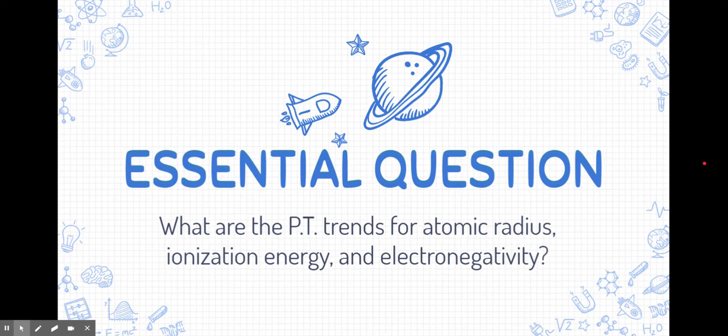What are the periodic table trends for atomic radius, ionization energy, and electronegativity? Remember, you need to answer this in a deep way, so you need to be able to explain what these trends are, as well as what each of those definitions mean.